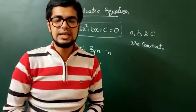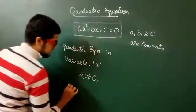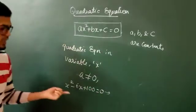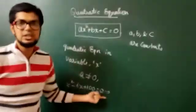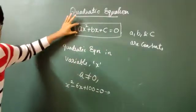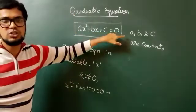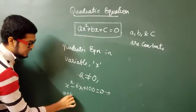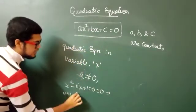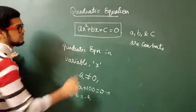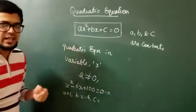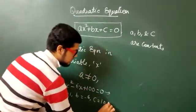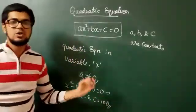Let me give you one simple example. The equation is X squared minus 6X plus 100 equals 0. Is this a quadratic equation? 100% yes, because this equation is of the form AX squared plus BX plus C equals 0. The coefficient of X squared is 1, so A equals 1. Comparing, B equals minus 6. And C is nothing but the constant 100. This is one example of a quadratic equation.